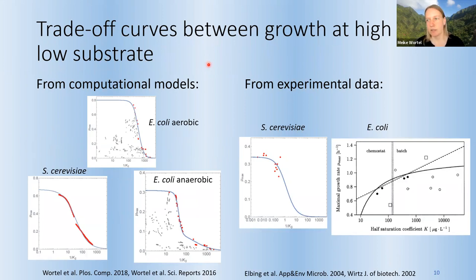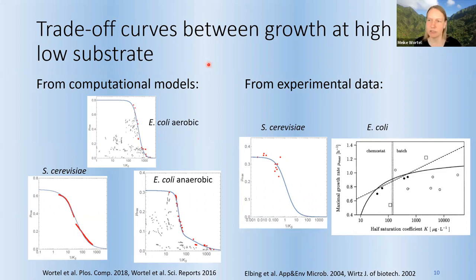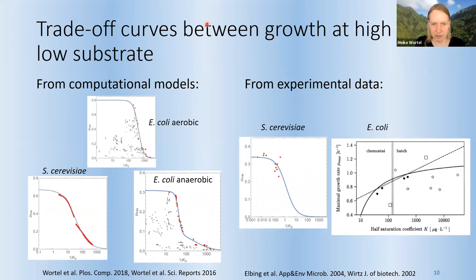Here we look at the possible properties for specialization on low and high resource level. Because I used Monod growth in this model, I looked at high maximal growth rate for the high resource specialist and low and high affinity for the low resource specialist. I found data for E. coli and the yeast Saccharomyces cerevisiae, both from experimental data and from models. Experimental data is nice but difficult because you need cells adapted to different routines. With a model you can do this, but these are detailed models of metabolism and you have to take extra assumptions. This is the data on which I will continue.